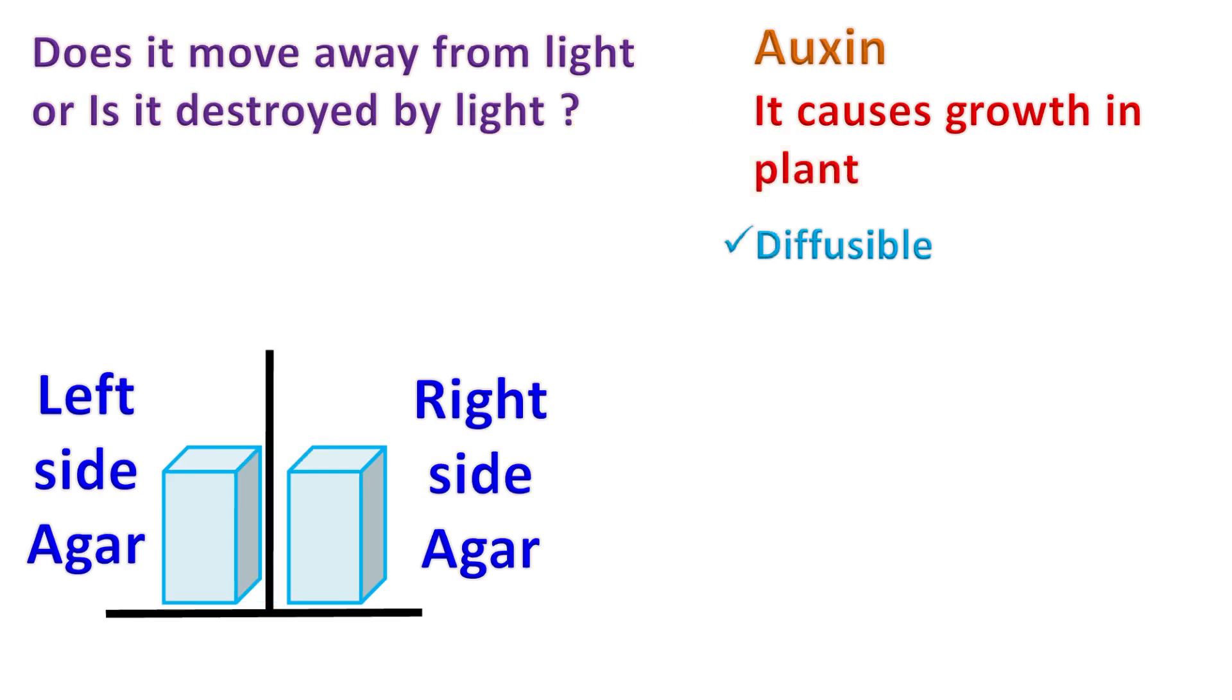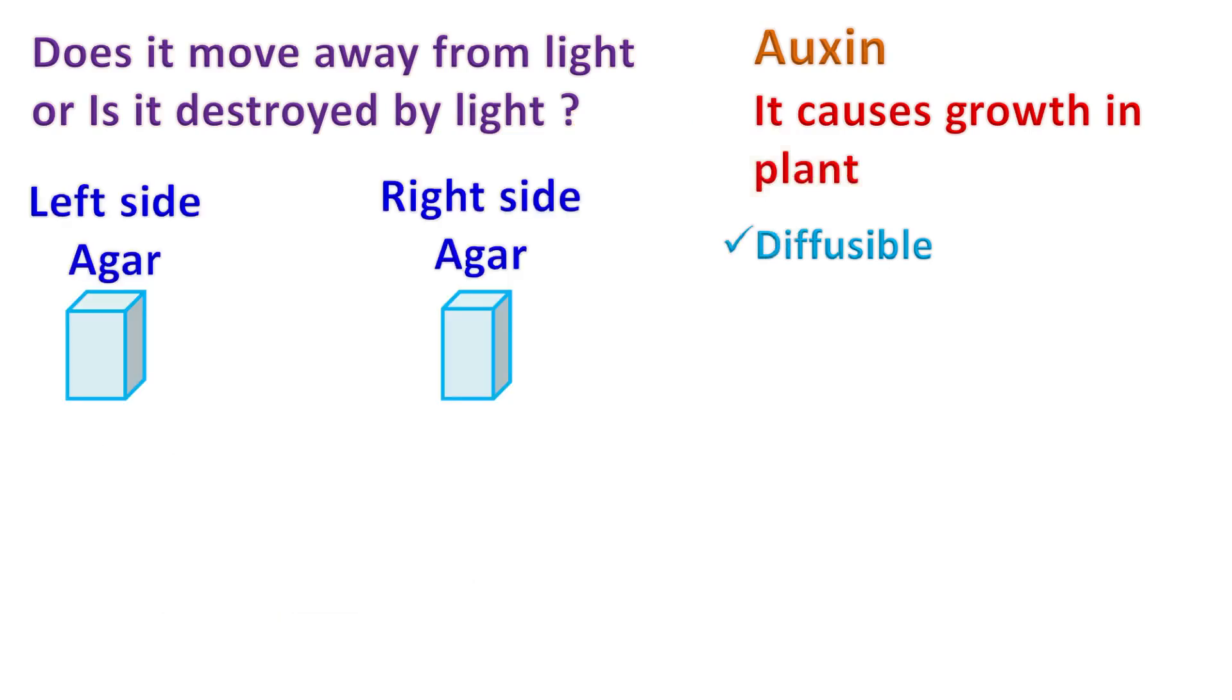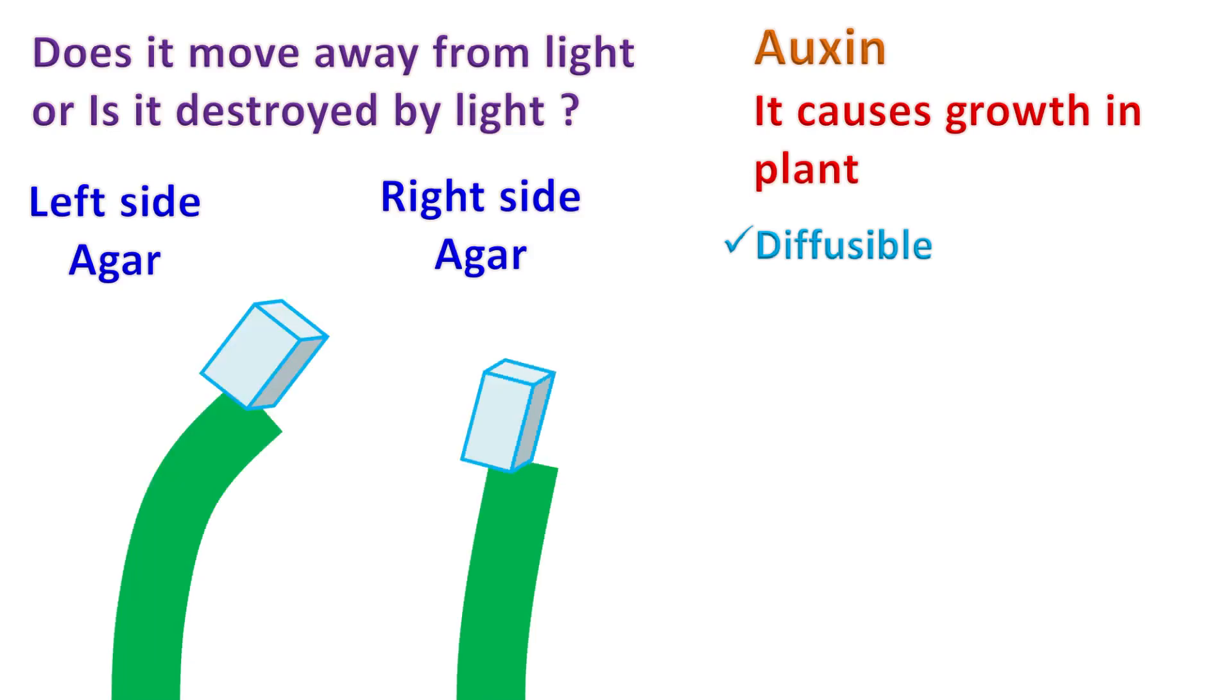Now both left and right agar blocks were taken and placed on one end of the cut coleoptile. The agar block which was taken from the left side showed more curvature as compared to the agar block taken from the right side.